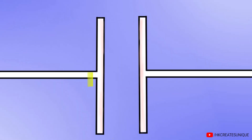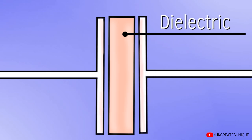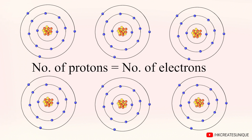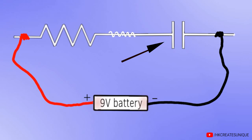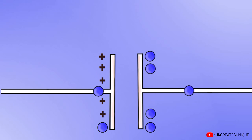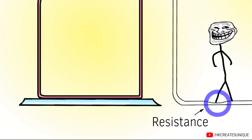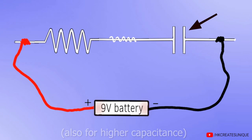A capacitor consists of two metal plates separated by a dielectric material. Each plate is of neutral charge, meaning the atoms have equal numbers of protons and electrons. But as the battery is connected, the plate connected to the positive terminal pulls electrons away, and the plate connected to the negative terminal fills with electrons. This filling of electrons can be thought of as water filling a tank, and the resistor can be thought of as the resistance provided by the pipe. So, higher the resistance, the more time the capacitor will take to fill its negative plate with electrons.